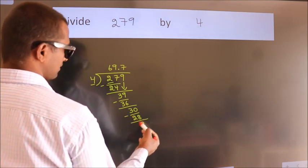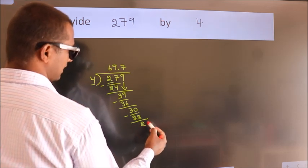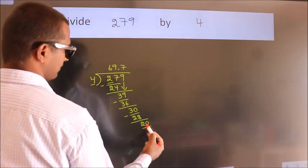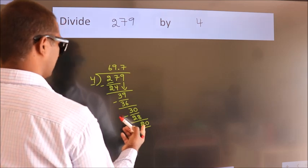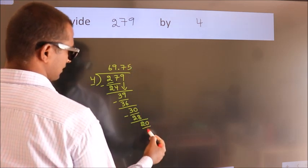After this, we already have the decimal. So directly take 0. So 20. When do we get 20 in the 4 table? 4 times 5 is 20.